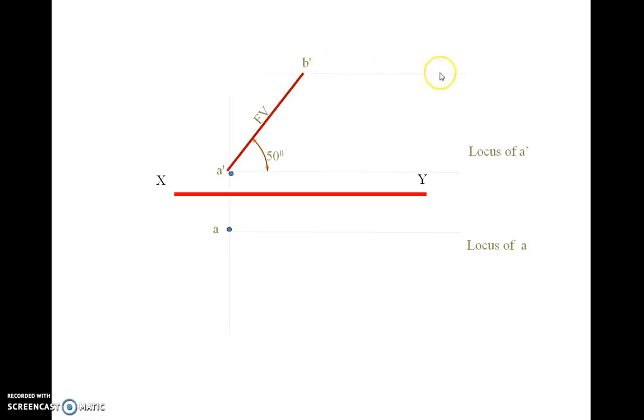Draw locus line of B'. Draw vertical line from end point B'. As we know, top view angle is 60 degree. Draw line starts from point A which cuts this vertical line at point B. This line A to B is known as top view.